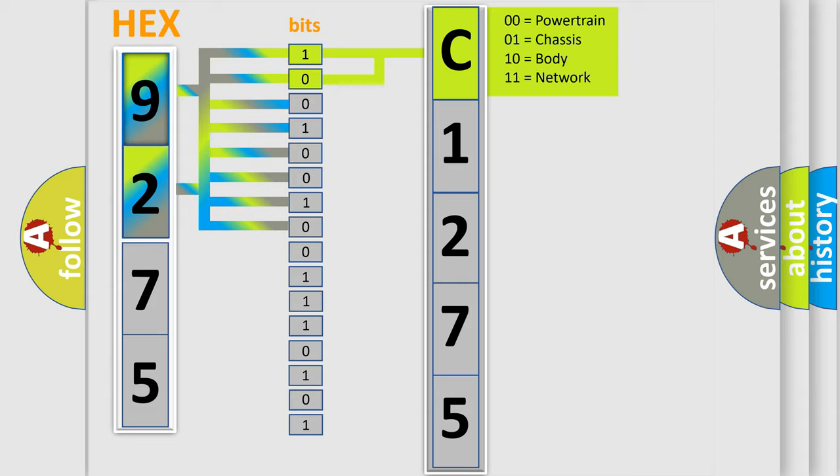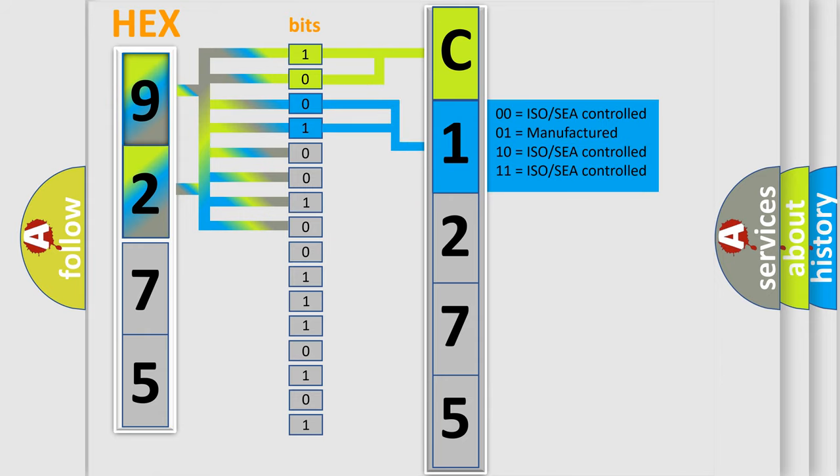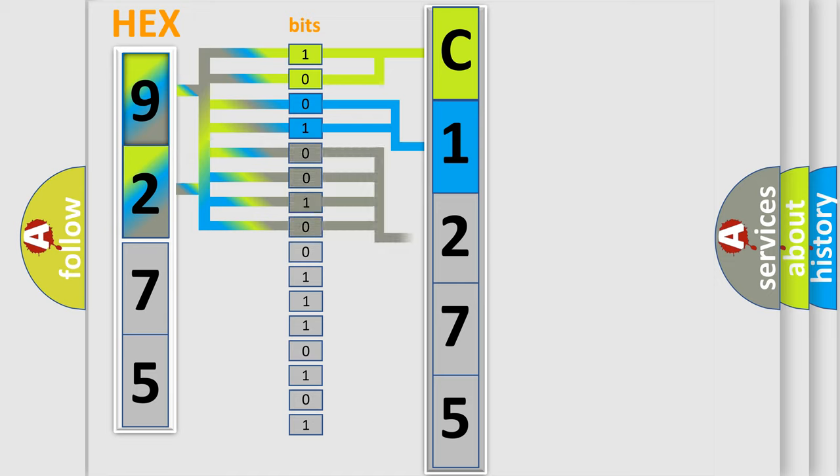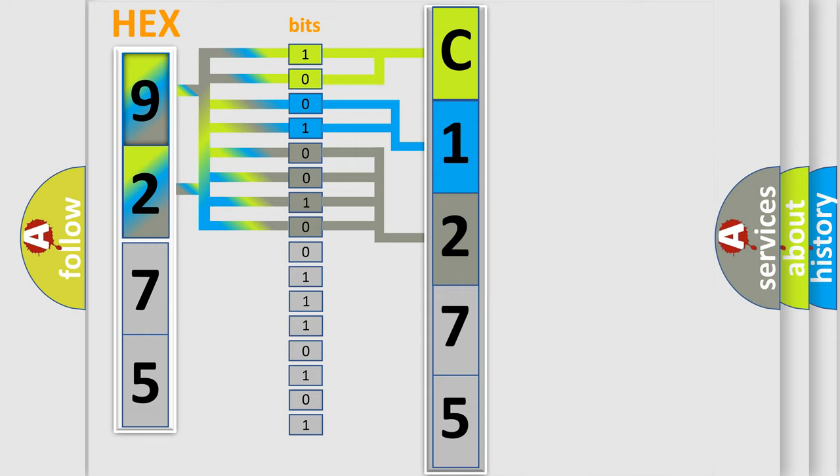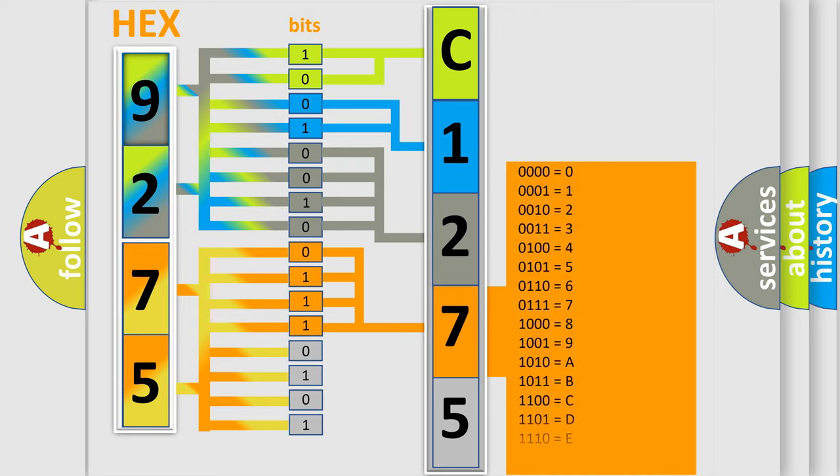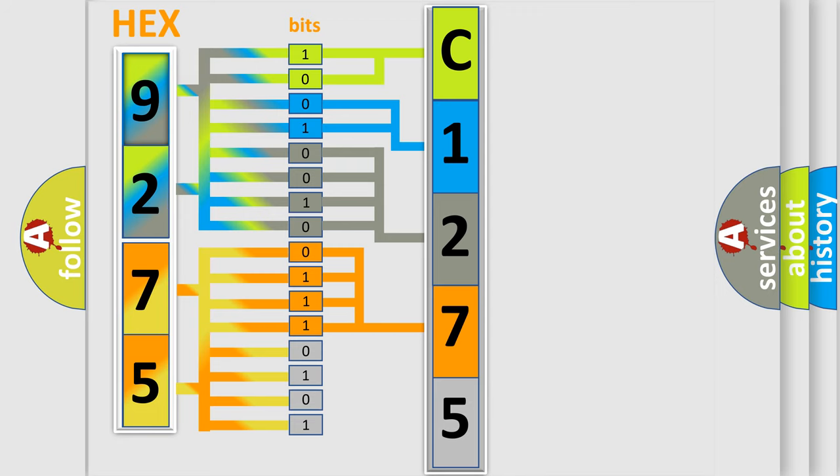By combining the first two bits, the basic character of the error code is expressed. The next two bits determine the second character. The last bit styles of the first byte define the third character of the code. The second byte is composed of a combination of eight bits. The first four bits determine the fourth character, and the combination of the last four bits defines the fifth character.